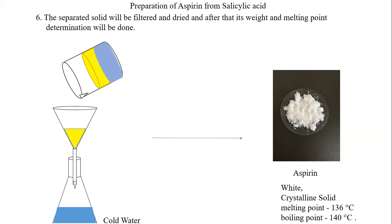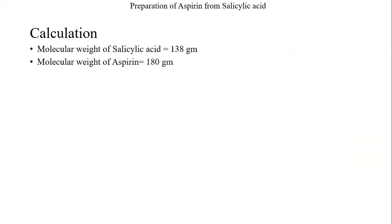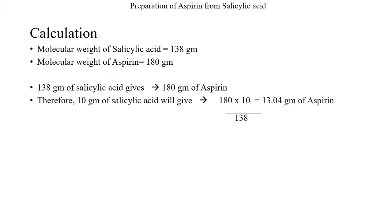After taking the weight of the aspirin prepared, we move to the calculation part. We first calculate the molecular weight of salicylic acid — 138 grams — and aspirin — 180 grams. From the reaction, one mole of salicylic acid gives one mole of aspirin, so it is a mole-to-mole ratio: 138 grams of salicylic acid gives 180 grams of aspirin. Since we took 10 grams of salicylic acid, the calculation is 180 × 10 ÷ 138, which gives 13.04 grams. This is the theoretical yield.